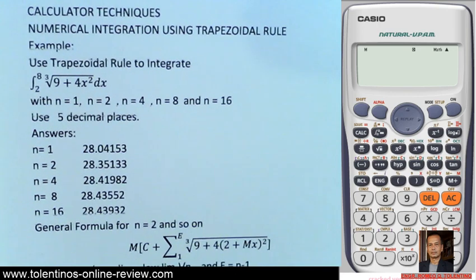Let us take a look at this problem. Use trapezoidal rule to integrate cube root of nine plus four X squared dX from two to eight. The first step is you will evaluate the value of cube root of nine plus four X squared at the lower limit and the upper limit. So type the function here.